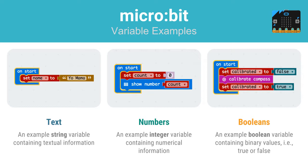Let's take a look at some examples of the different types of variables you can create using MicroBit blocks. In the first example, you see a simple variable named name, which is assigned the text "yo mama." Remember, programmers refer to pieces of text as strings. In the second example, you see a variable named count being assigned the number zero. And finally, you see an example of a Boolean variable named calibrated, which tracks a binary reality — whether the device's compass has been calibrated or not.